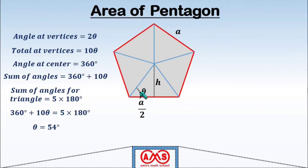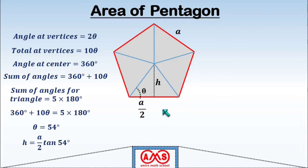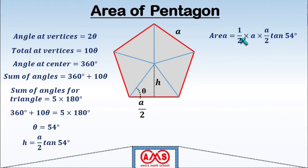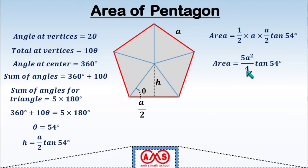To find the height of each triangle: the height relates to the base and angle θ by h equals (A/2) times tan(54°). The area of one triangle is one-half times base A times height (A/2) times tan(54°). The total area of the regular pentagon — the sum of five such triangles — is (5A²/4) times tan(54°).